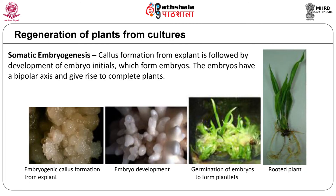The second route is through embryogenesis, in which the callus cells differentiate to form de novo embryos called somatic embryos, which are generally seen on the surface of the callus. The embryo initials arise from 2–3 callus cells that get the proper hormone cues from neighbouring cells. The somatic embryos have a bipolar axis and can easily be separated from the callus tissues and germinated to form complete plants.